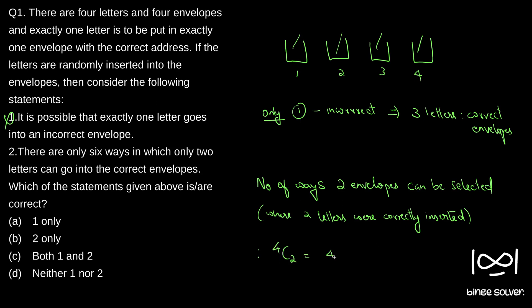What is 4C2? It equals (4 × 3) / (2 × 1) = 6. So we can choose two envelopes in six ways.